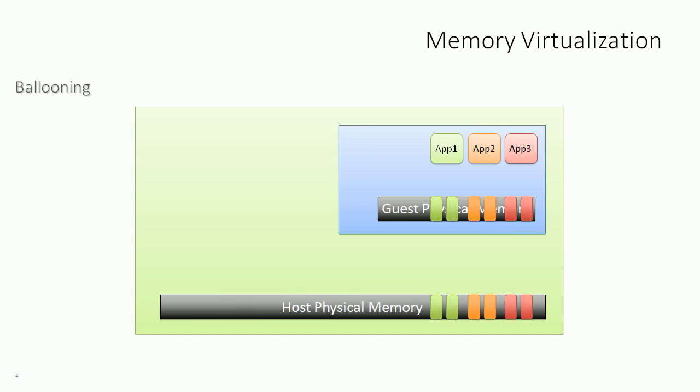Ballooning, on the other hand, doesn't run constantly — it only happens when memory contention occurs. If we look at our host physical memory and almost all of it is in use, and then one of the applications inside a VM closes, the guest operating system will mark those memory pages as free in guest physical memory. However, the guest OS doesn't know it's a virtual machine, so it won't inform the ESXi host. The ESXi host is then under the false impression that those memory pages are still required, wasting memory.